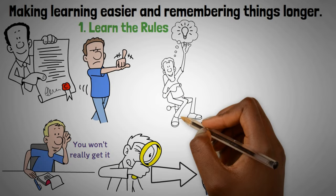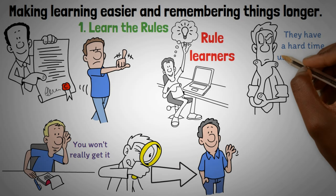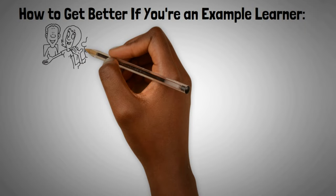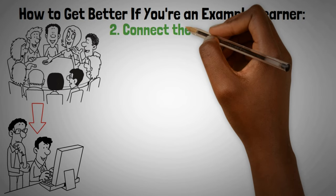Some people are good at seeing the big ideas. They're called rule learners. Others remember specific things they see or hear, but they have a hard time using them in new ways. They are example learners. How to get better. If you're an example learner, look at lots of examples together to spot what they have in common. This helps you see the big rules.